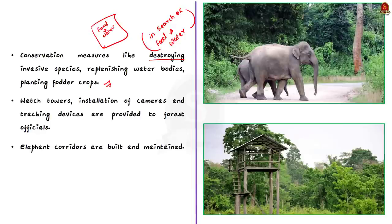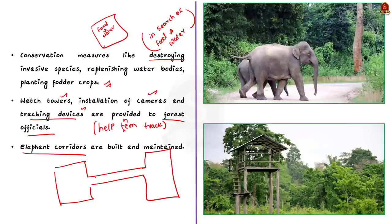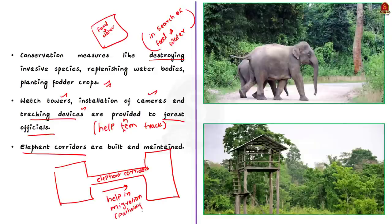Thirdly, infrastructure development like watchtowers, installation of cameras and tracking devices are provided to forest officials, so that they can have continuous checks on the movement of elephants. Finally, the last major step is the building and maintenance of elephant corridors. Elephant corridors are linear, narrow, natural habitat linkages that allow elephants to move between different forest habitats without being disturbed by humans. Since elephants are migratory animals, they travel large distances during their life. These elephant corridors act as pathways for the safe movement of elephants and also avoid man-made disturbances.